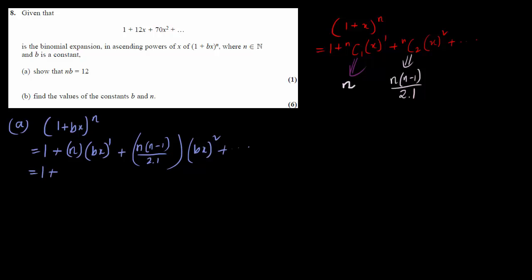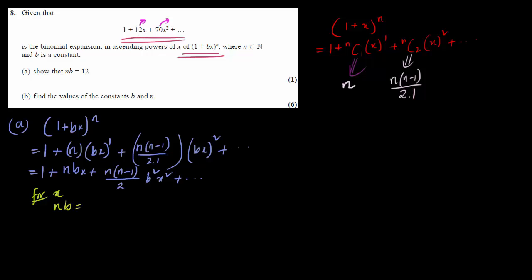Simplifying, this becomes 1 plus nbx plus n(n-1)/2 · b²x² plus on and on. They have already given us the expansion, so we can compare coefficients. The coefficient of x is 12, and the coefficient of x² is 70. For part (a), comparing the x term: the coefficient is nb, and the given coefficient is 12, so nb = 12 is shown.